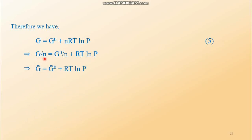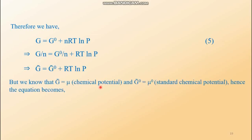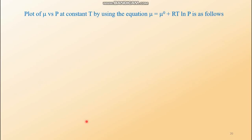Since molar free energy is chemical potential and standard molar free energy is standard chemical potential, we can write equation six: μ equals μ⁰ plus RT ln P. Here μ⁰ is the standard chemical potential and P is the pressure of the ideal gas.